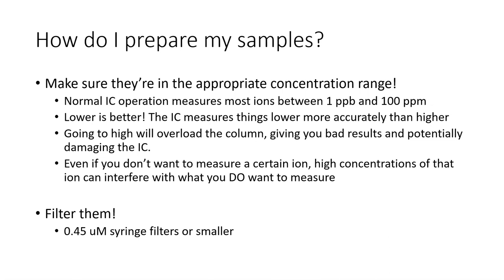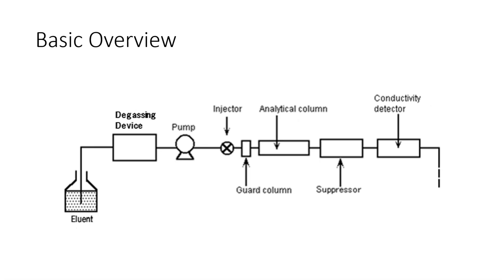Now we'll move into a basic overview on the IC. I'm going to refer to this image a lot because it goes through the general flow path, and we'll run through each one of these parts individually. We have our eluent which goes through a degasser, the pumps that push eluent through the system, an injector, a guard column and analytical column, a suppressor, and a conductivity detector.